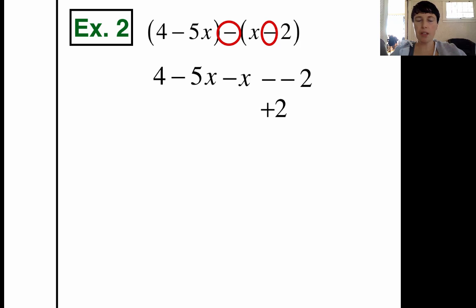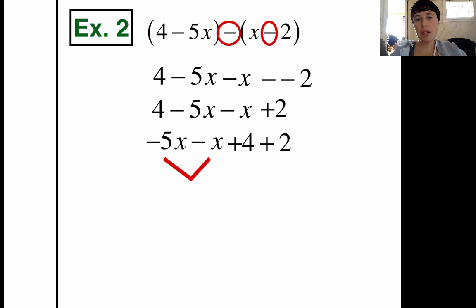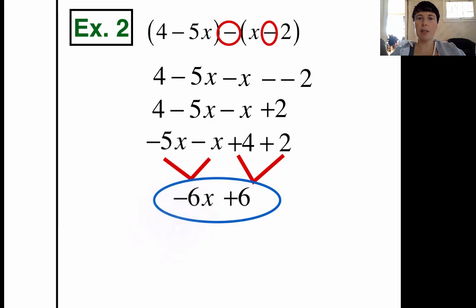So I'm going to copy all the other stuff down. 4 minus 5x minus x, and then it's going to be plus 2. Now put your like terms together. So the negative 5x minus x should stay together. The 4 and the plus 2 should stay together, and we'll combine them. Negative 5x, take away an x, is negative 6x. And 4 plus 2 we also know is 6. So here's our solution, negative 6x plus 6. That's our simplified expression.